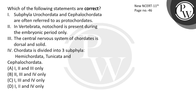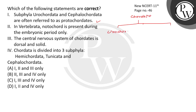Let's read this question: which of the following statements are correct? Statement I is correct — subphyla Urochordata and Cephalochordata are often referred to as protochordates. When you read the Chordata, you divide it into three subphyla.